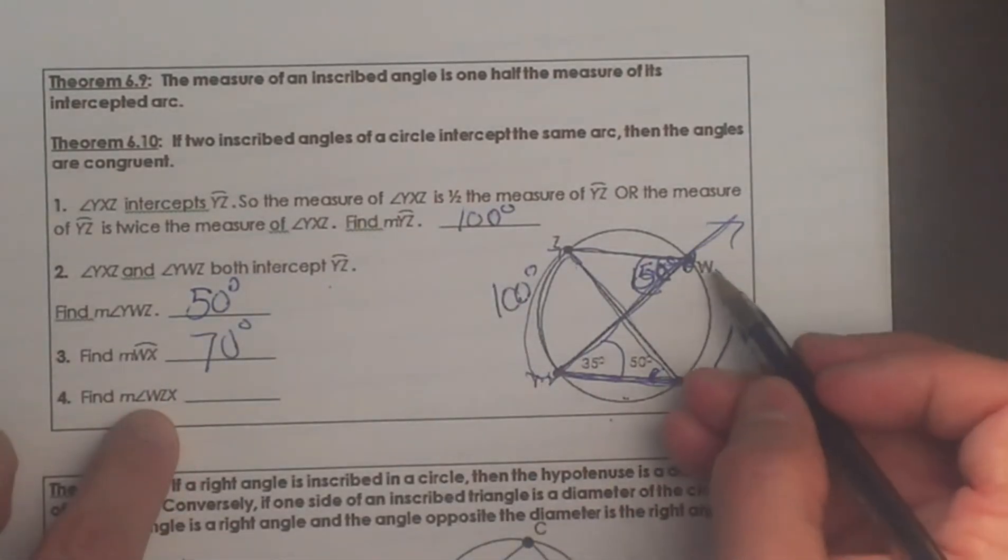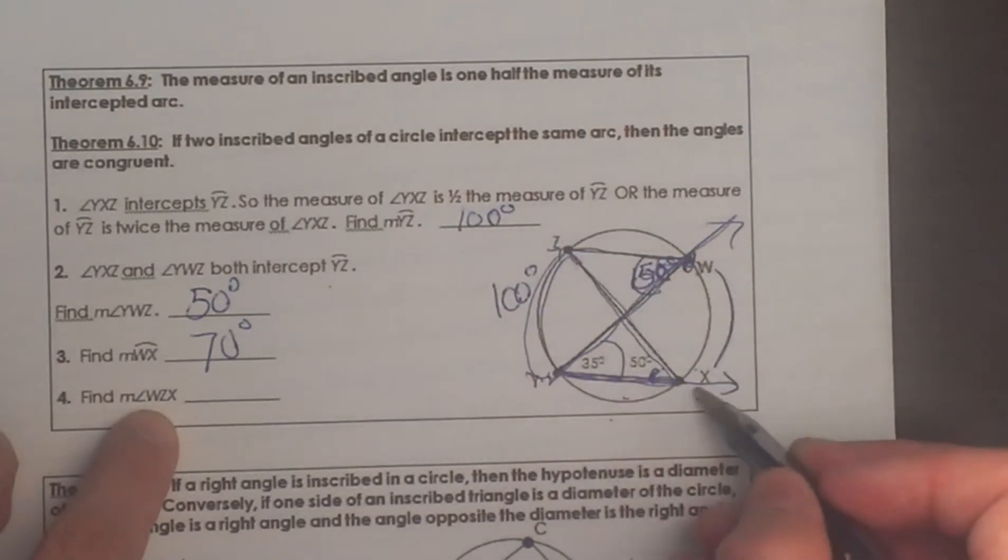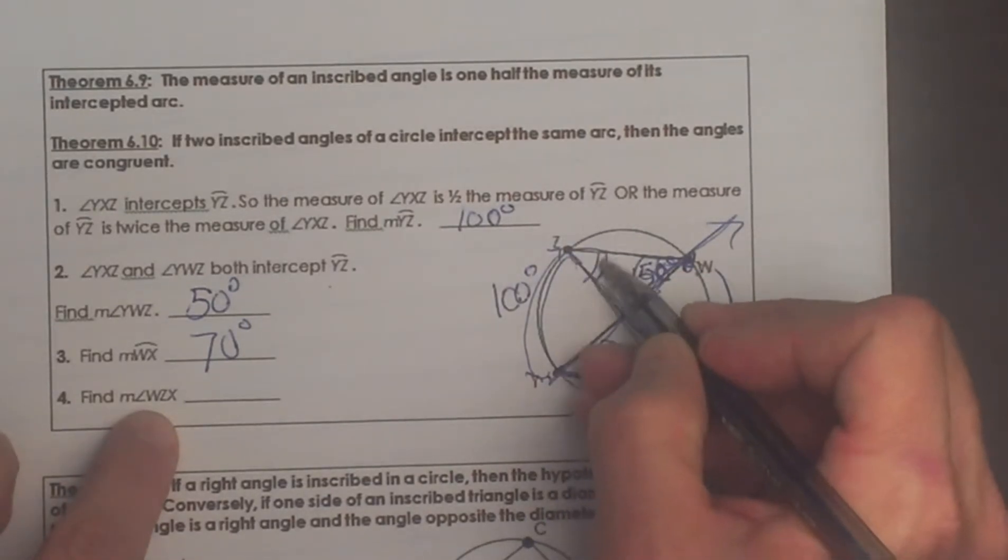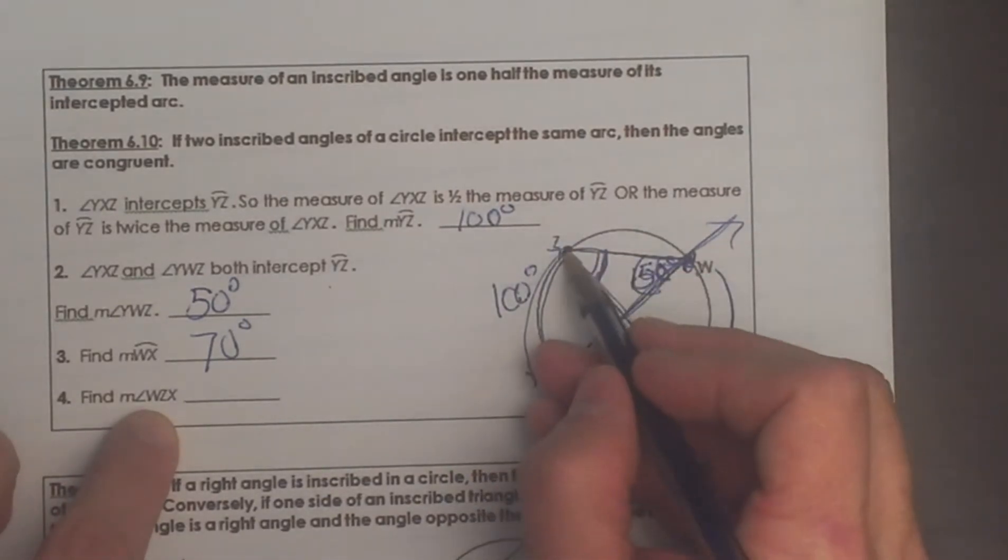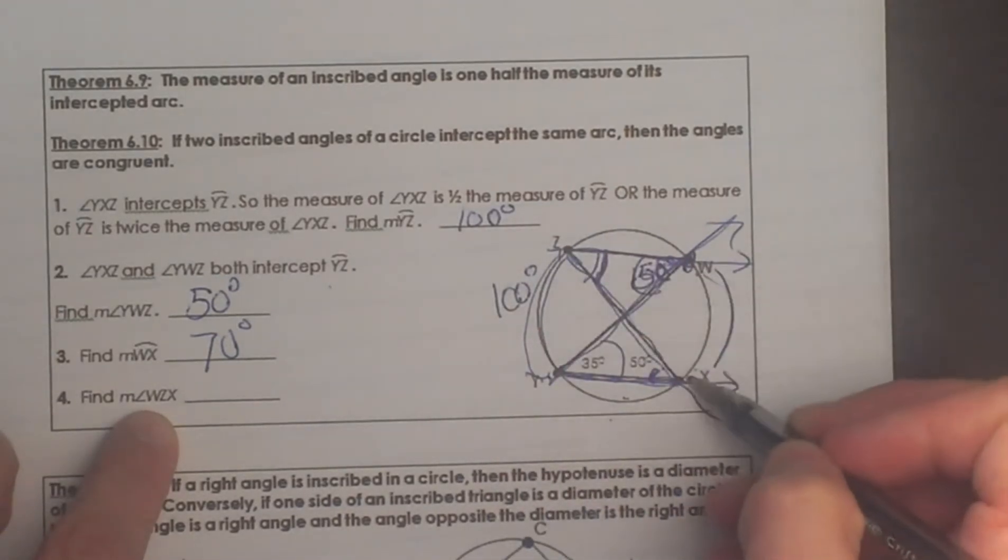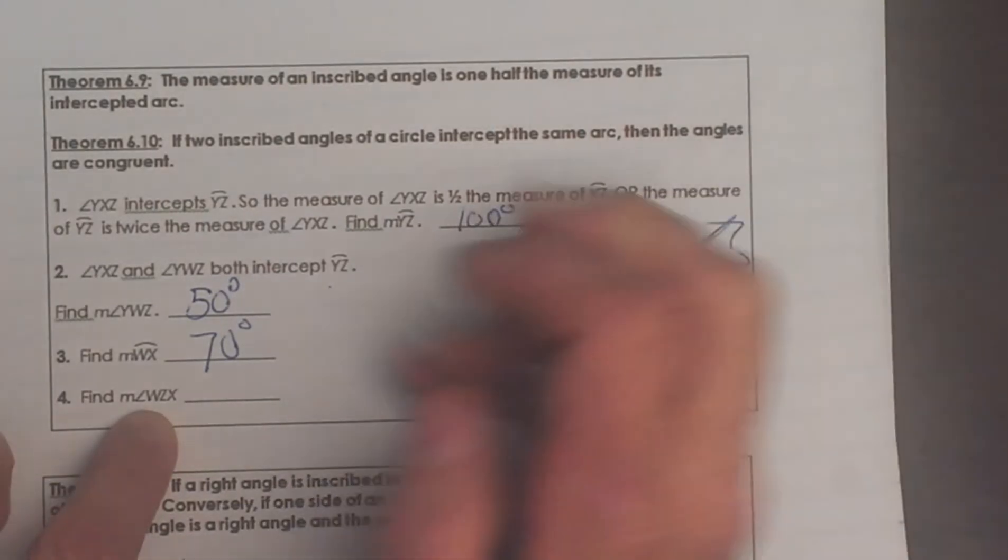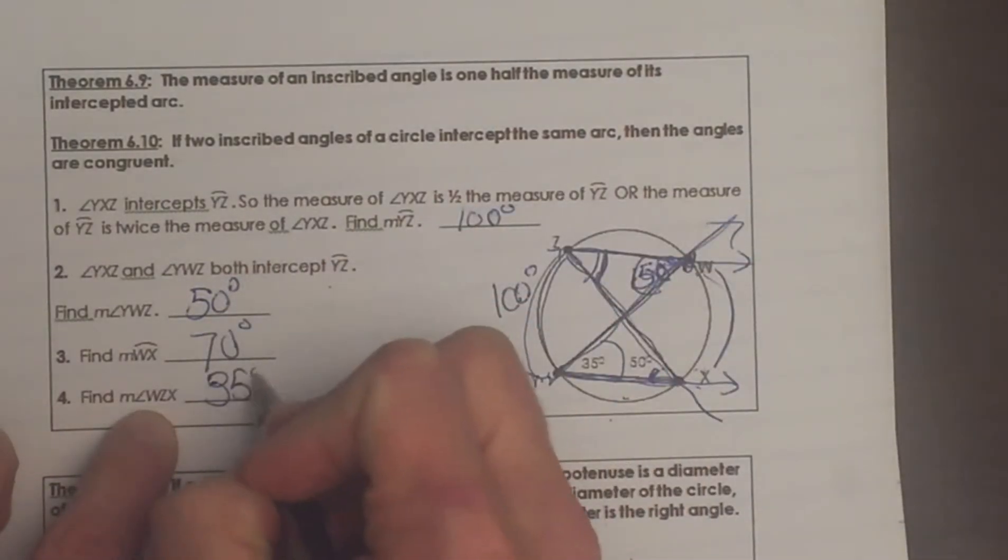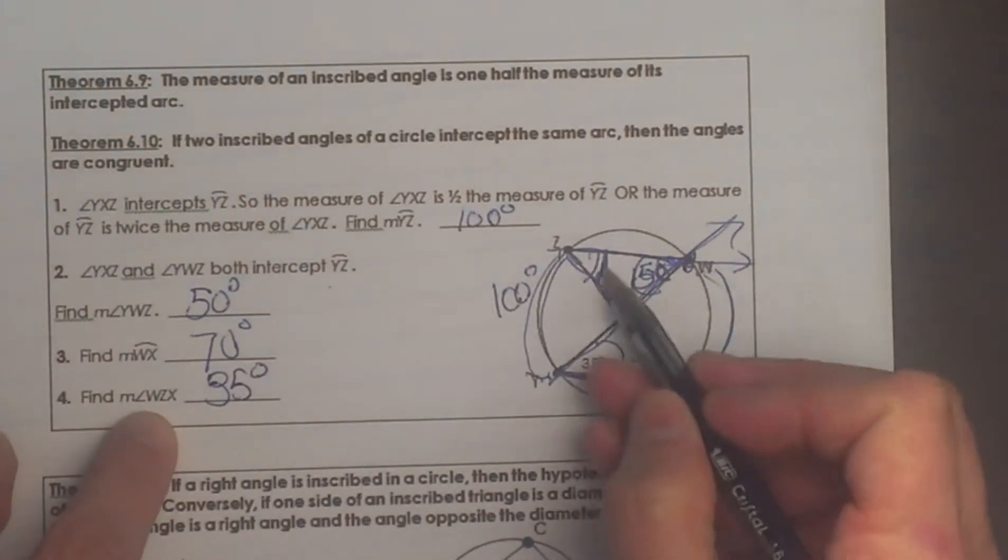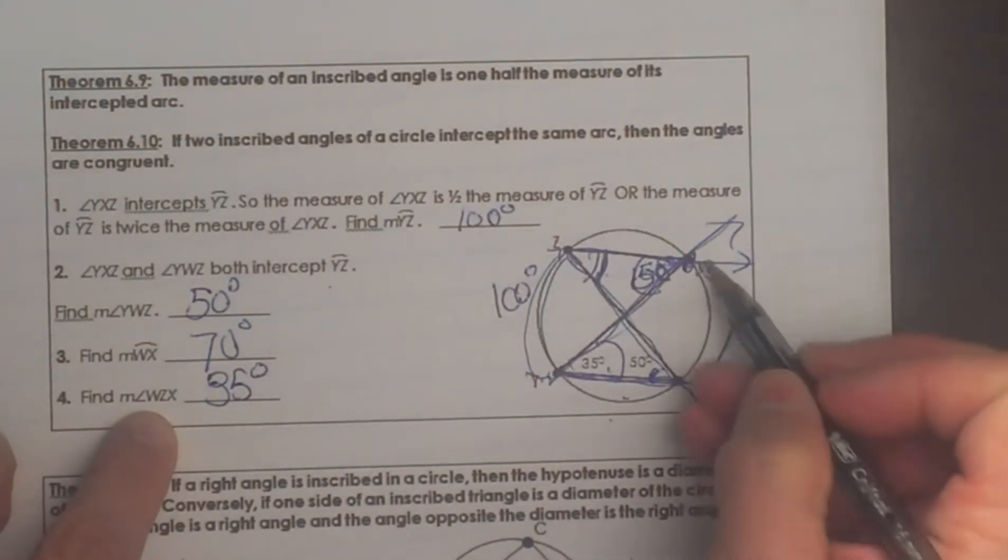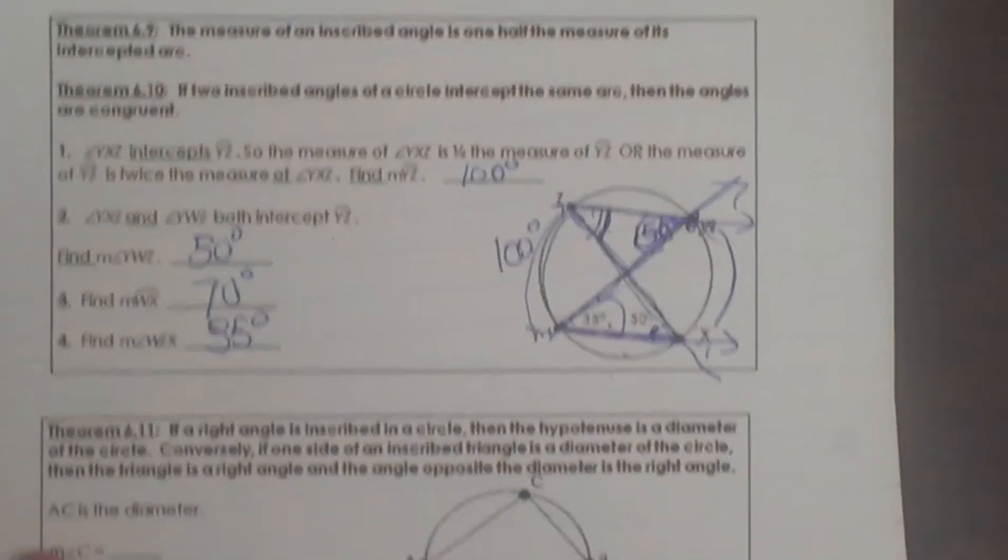And how about the angle w, z, x? That is this angle right here. Well what arc does that intercept? That intercepts the same arc w, x. So if this is 70 this is 35. So we can see that these two angles intercept the same arc w, z. So that is what that theorem is saying.